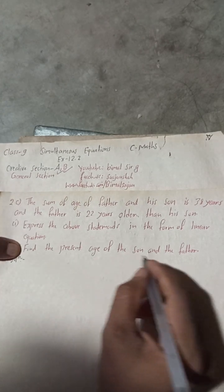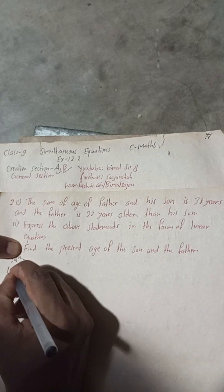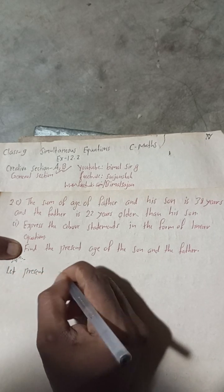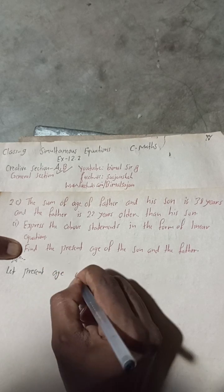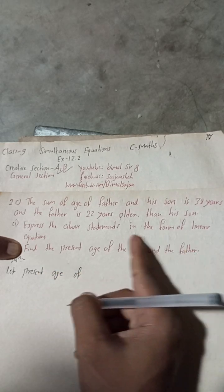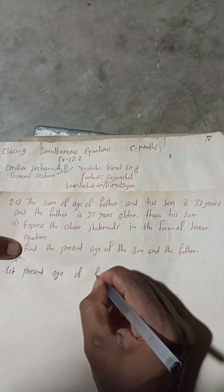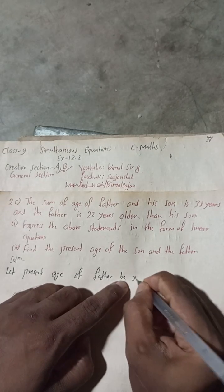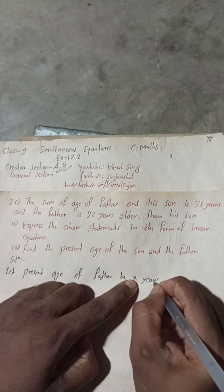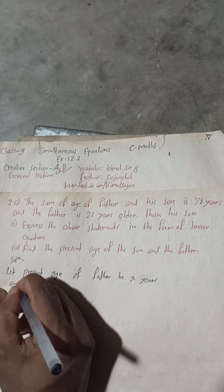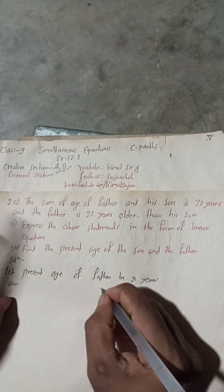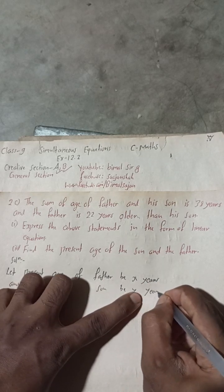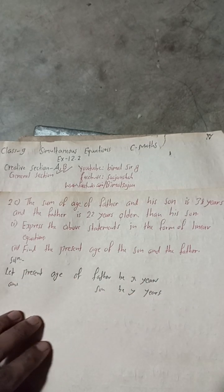To find the present age of son and father, let the present age of the father be x years, and the present age of the son be y years.